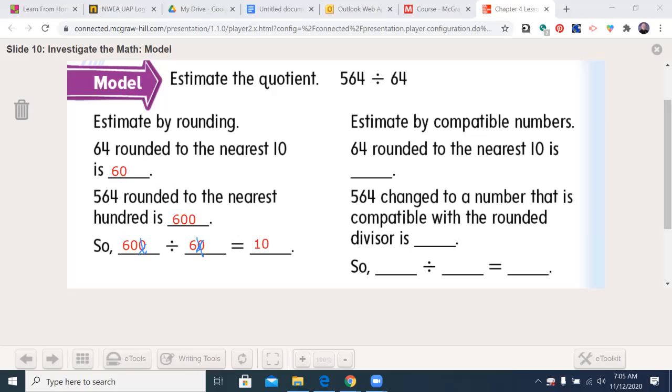Now let's go over here using compatible numbers. 64 rounded to the nearest 10 is still 60. So you can start seeing that some steps are probably going to be a little bit closer. 564 changed to a number that's compatible with the rounded divisor. So something that 6 will go into evenly. For this example, I could go 600 or I could go 540 because I want something that this 6 right here will go into evenly.